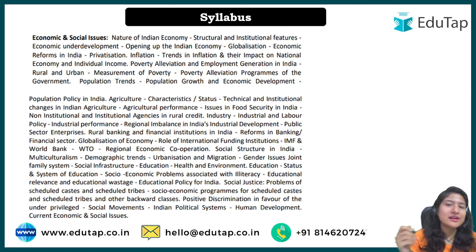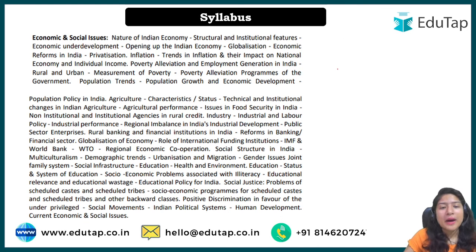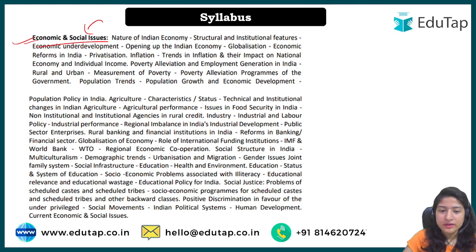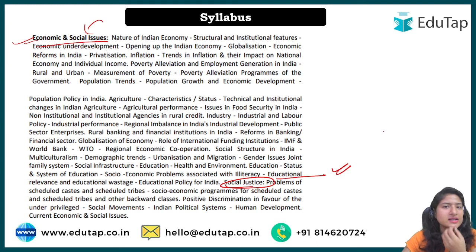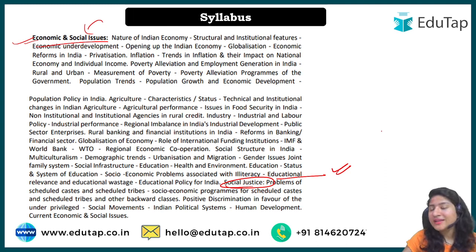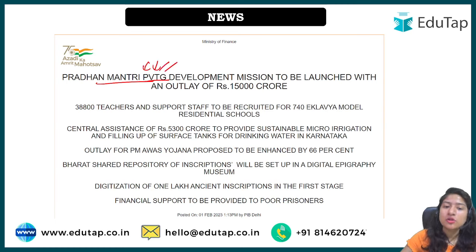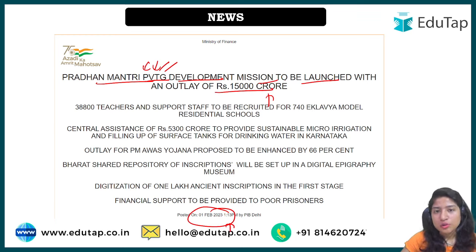This scheme was recently launched, which makes it important from the examination point of view. Looking at the syllabus of Economic and Social Issues, there is a section on Social Justice which talks about groups in society that were neglected for long and efforts to uplift them and bring equality. The Pradhan Mantri PVTG Development Mission — Particularly Vulnerable Tribal Group Development Mission — was announced in February 2023 during the budget session with an outlay of rupees 15,000 crore.